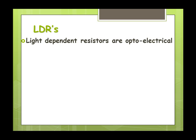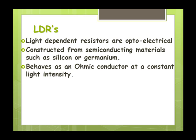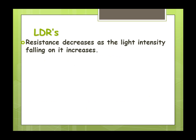Once we send that information, we need to detect it. So an LDR, this is a light-dependent resistor. It's an optoelectrical device. It's constructed from a semiconducting material. And it behaves like an ohmic conductor at constant light intensity. So the resistance changes depending on the intensity of the light falling on it. The less the light intensity, the greater the resistance, or as it says there, the resistance will decrease. You get a smaller resistance as you get more light on it.